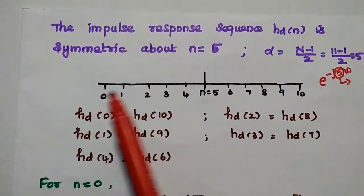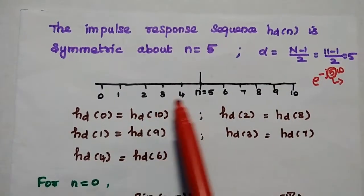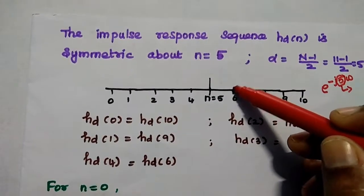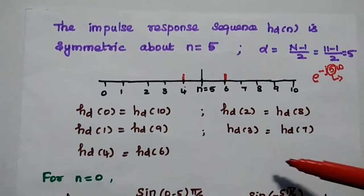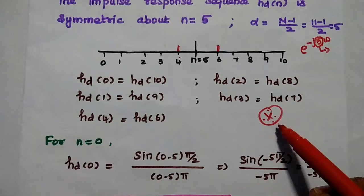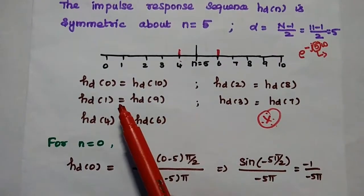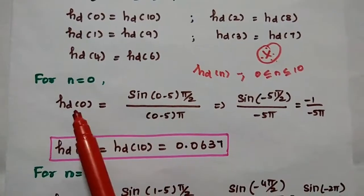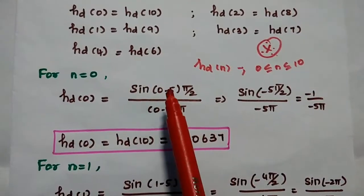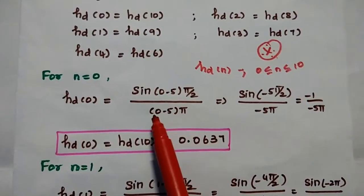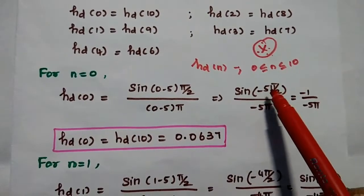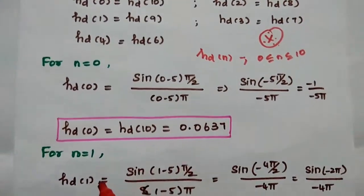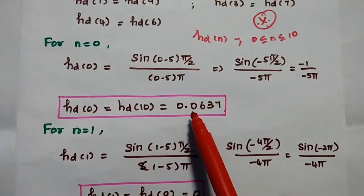So we can say hd(0) = hd(10), hd(1) = hd(9), hd(2) = hd(8), hd(3) = hd(7), and hd(4) = hd(6). We are going to obtain hd(n) values from 0 to 10. For n = 0: hd(0) = sin(−5π/2) / (−5π). Since sin(−5π/2) = −1, we get hd(0) = hd(10) = 0.0637.